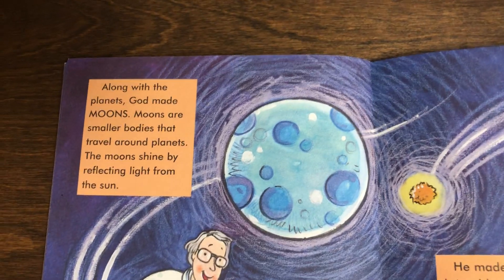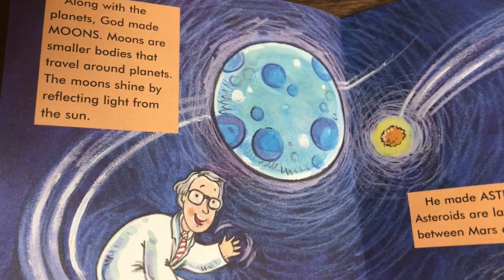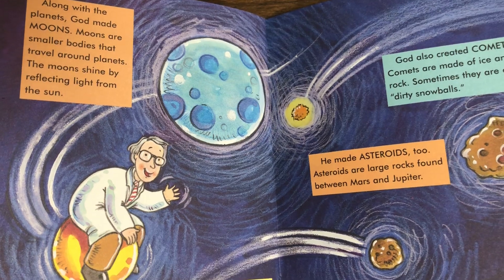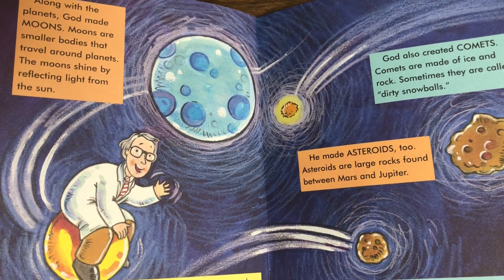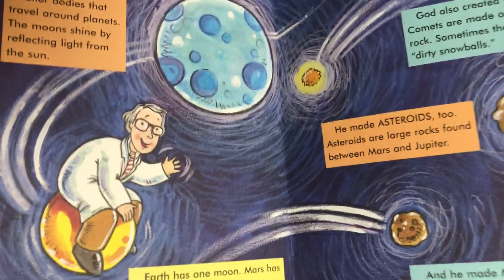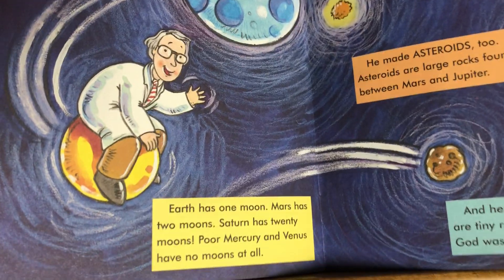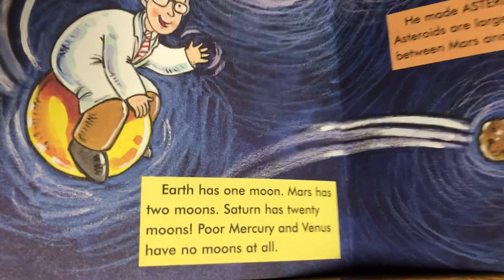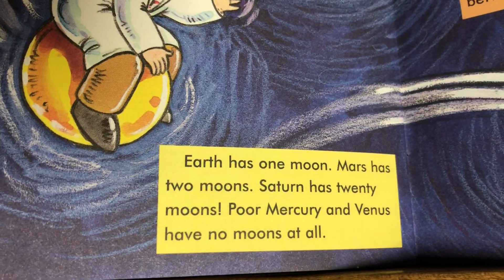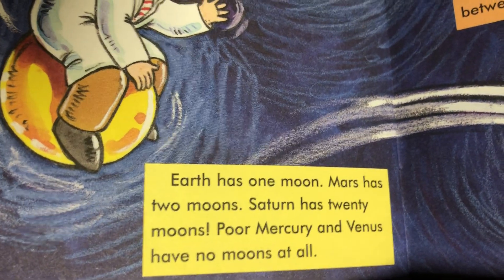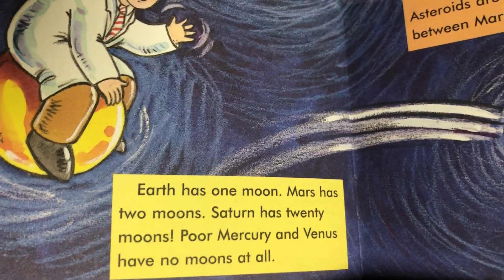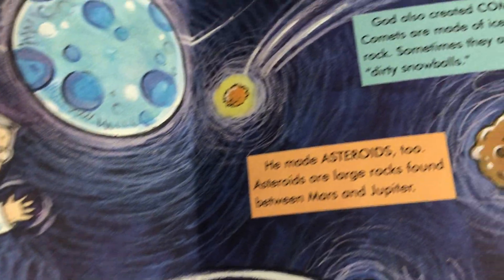Among the planets, God made moons. Moons are smaller bodies that travel around the planets. The moons shine by reflecting light from the sun. Earth has one moon, Mars has two moons, Saturn has 20 moons. Poor Mercury and Venus have no moons at all.